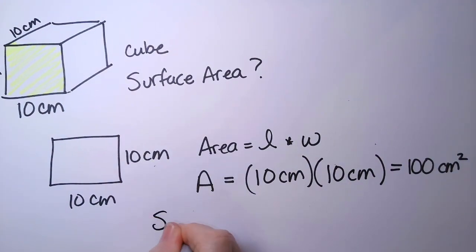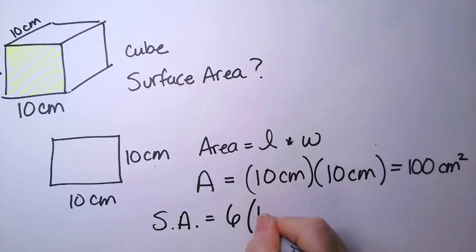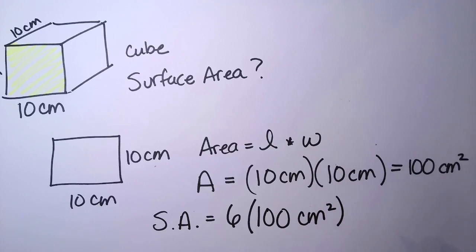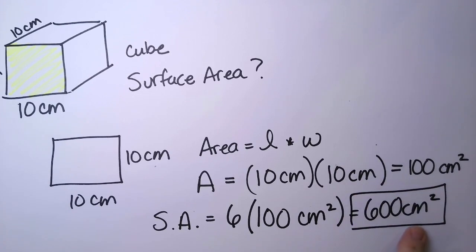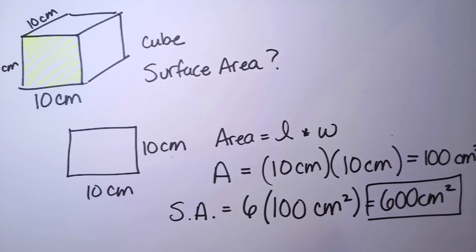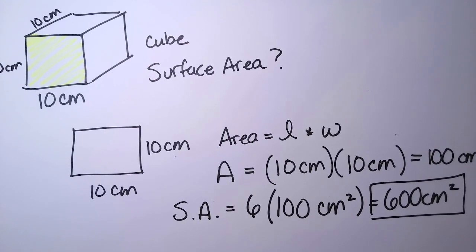So my total surface area is going to be the number of faces, which is 6 times 100 centimeters squared, and you can see that is 600 square centimeters. This is also how you know it's area, not volume. Volume would be centimeters cubed. And so there you have it for our cube.